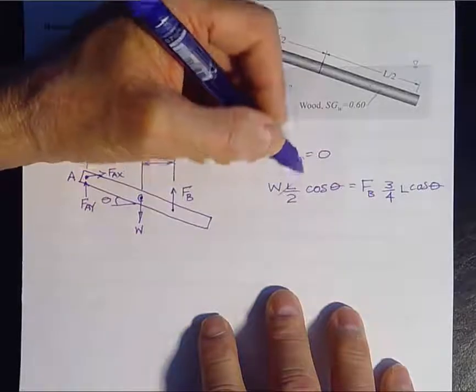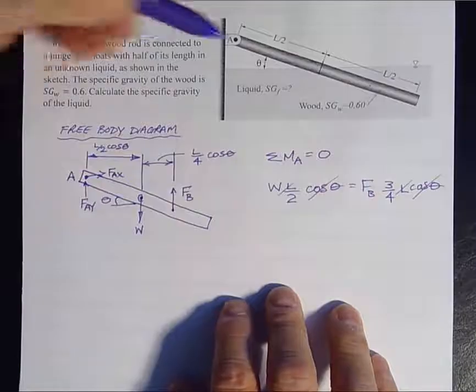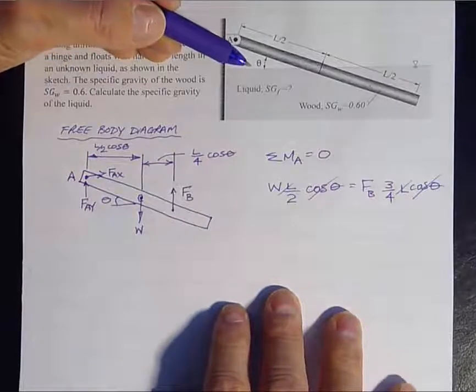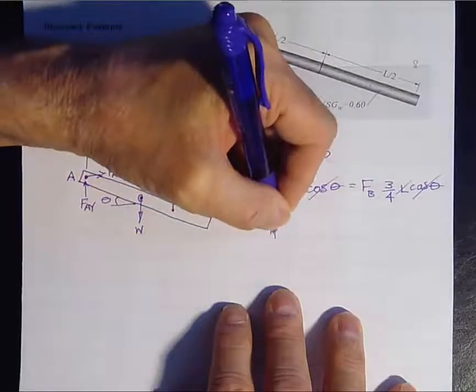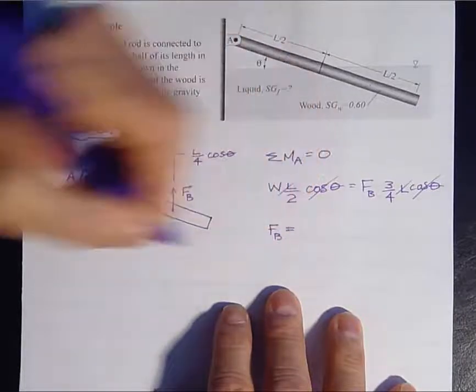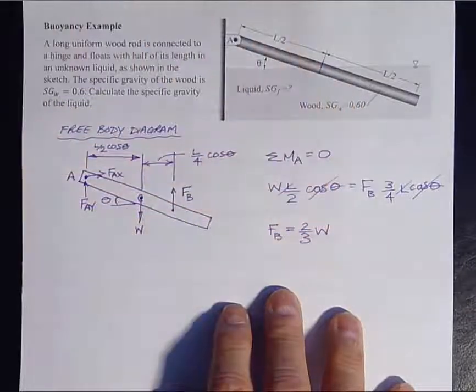So now we can see that the L cos theta's cancel out, so it really doesn't matter. That's why we weren't told the angle in this problem. It's independent of the angle. And we get that the buoyancy force in static equilibrium is two-thirds of the weight.